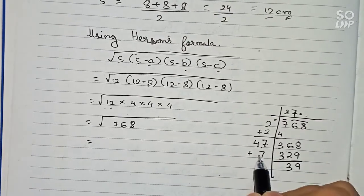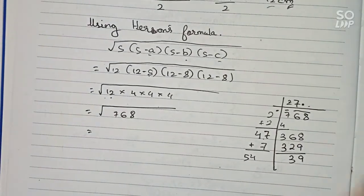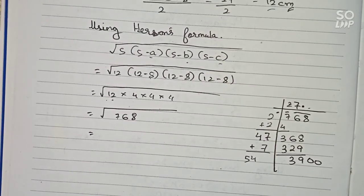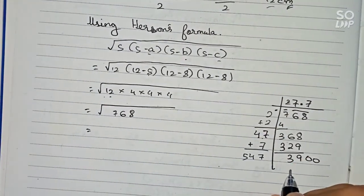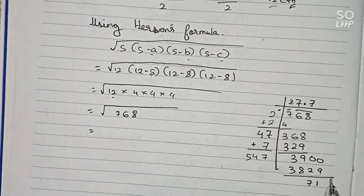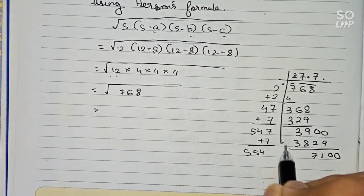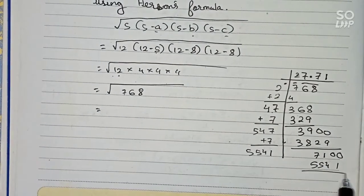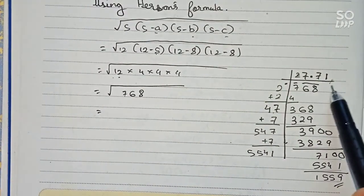Since we cannot go further without a decimal point, we place the decimal point and bring down two zeros, making it 3900. For the next step with 54 as the base, we find that 7 works again: 547 times 7 gives 3829, remainder is 71. Bringing down two more zeros gives 7100, and with 554 as base, 1 works: 5541 times 1 gives 5541, remainder 1559. We now have two decimal places.